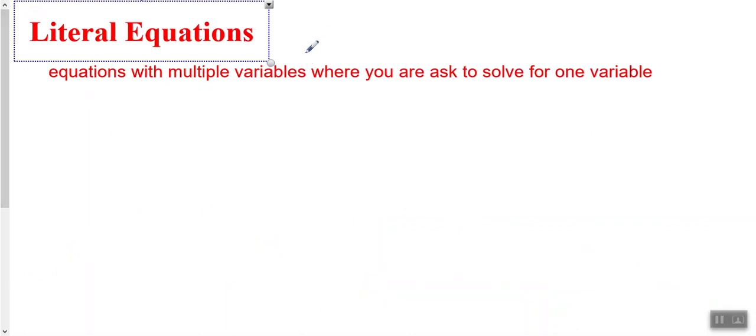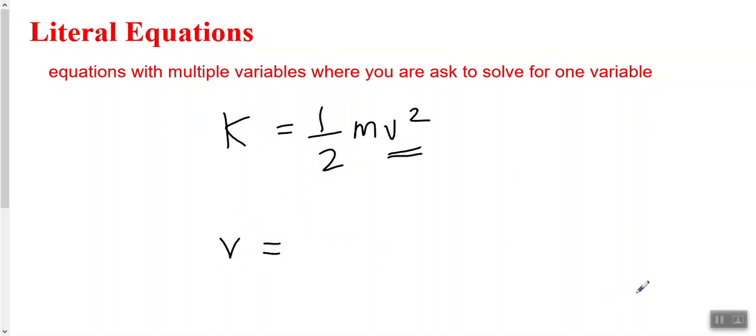Another one would be literal equations. These are solving for one variable with different variables in an equation. Suppose you have this equation and you are tasked to find the variable. For example, let's take a look at this mathematical equation. This is the equation and you'll be asked to find the velocity. Go ahead, pause the video and try to rearrange this equation and write down the variable that is unknown on the left side of the equal sign.